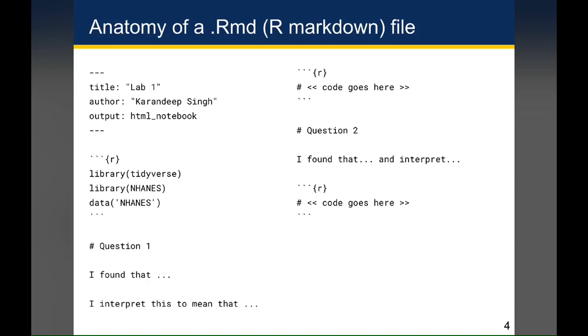First of all, you'll notice on the top left that there is a title, an author, and an output with three dashes before and after. That section is absolutely required and it tells the document what to set as your title. It'll add in your author information and the HTML notebook output is what tells R that you want a notebook HTML file to automatically generate.